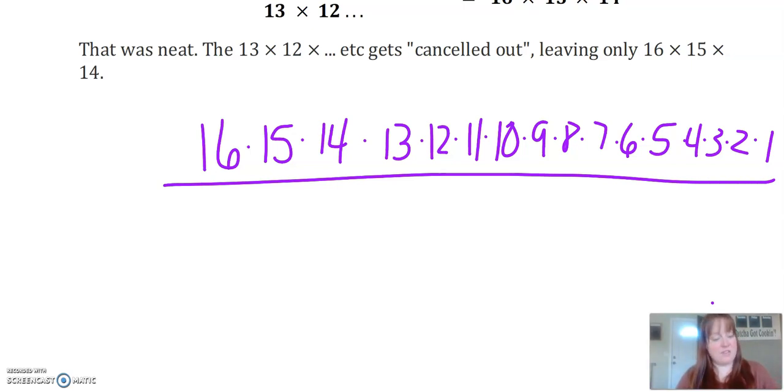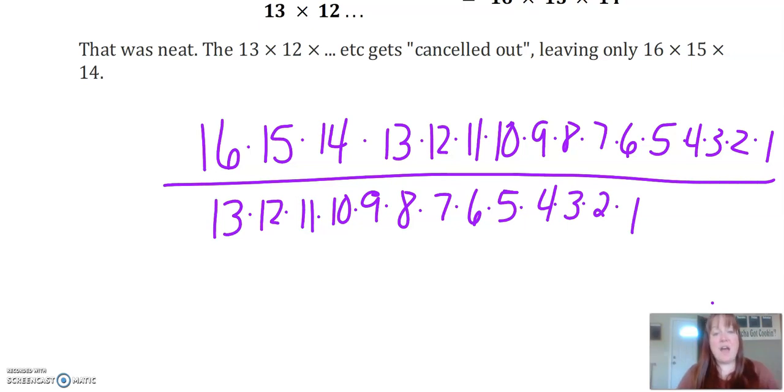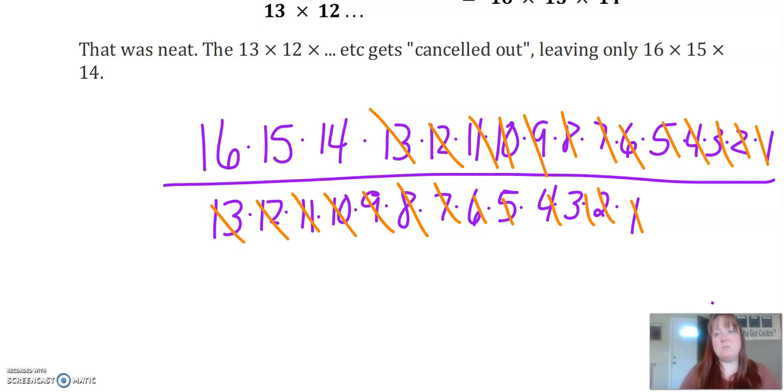So how do I get rid of that 13 times 12? Well, I'd need to divide, right? I need to divide this by 13 times 12 times 11 times 10 times nine times eight times seven times six times five times four times three times two times one. I need to divide all of those numbers out, right? And then these would all cancel. Like all of these numbers would cancel out, right? And all I'd be left with is 16 times 15 times 14, which is exactly what I wanted. So how can I write that in factorial notation? I just want 16 times 15 times 14. Well, on the top, I had 16 factorial, right? And what did I divide it by? I divided it by 13 times 12, I'm not going to say it over and over again, but you get the picture, right? What is that on the bottom? Well, that's 13 factorial, right? So I had 16 factorial divided by 13 factorial.